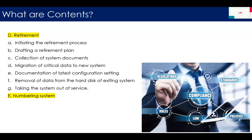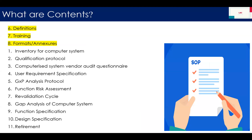Then retirement. This includes: initiating the retirement process, drafting a retirement plan, collection of system documents, migration of critical data to a new system with defined criteria and risk assessment, documentation of the latest configuration settings, removal of data from the hard disk of the existing system, and taking the system out of service. You also need to define a numbering system, add definitions, add training procedures, and design formats such as inventory management of your computer system, qualification protocols, vendor audit checklists, URS, GXP analysis protocol, FRA, re-validation cycle, GAP analysis, functional specification, design specification, and retirement documentation.